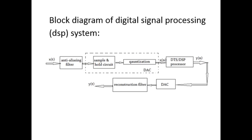This is the block diagram of our digital signal processing system. We have an anti-aliasing filter, sample and hold circuit, quantization, discrete time system, DSP processor, DAC system, and reconstruction filter.